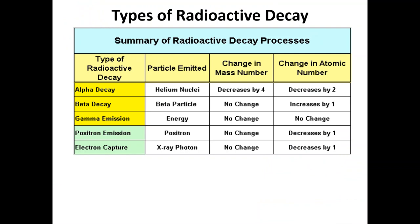Before proceeding towards the natural radioactive series, we will have a brief discussion on the types of radioactive decay. Different types of radioactive decay are summarized in this table. On the leftmost column we have the type of radioactive decay, then the particles emitted during that decay, and the effect on the mass number and atomic number.